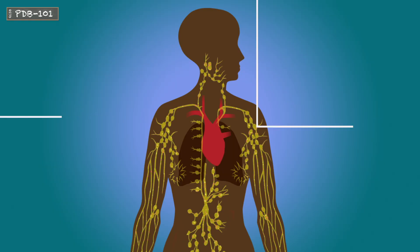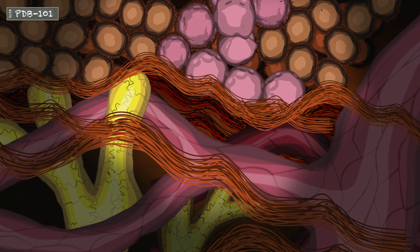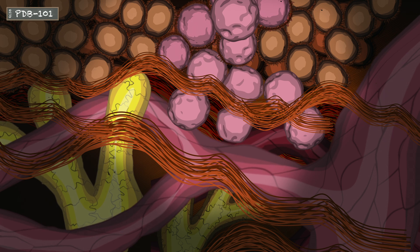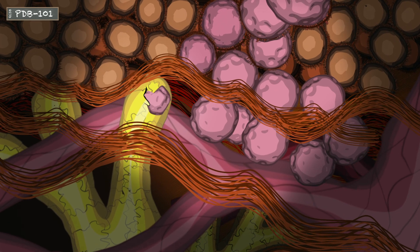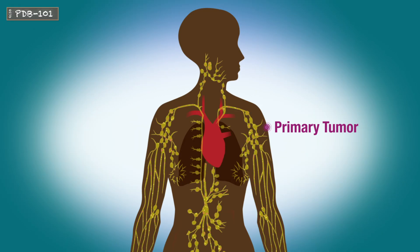Once the cancer cells evade immunity, they become tumors. Tumors can migrate in a process known as metastasis. Once tumors metastasize, they can become very difficult to treat with standard chemotherapy.